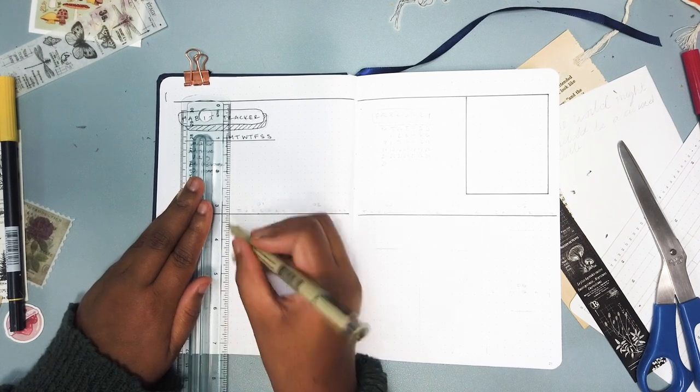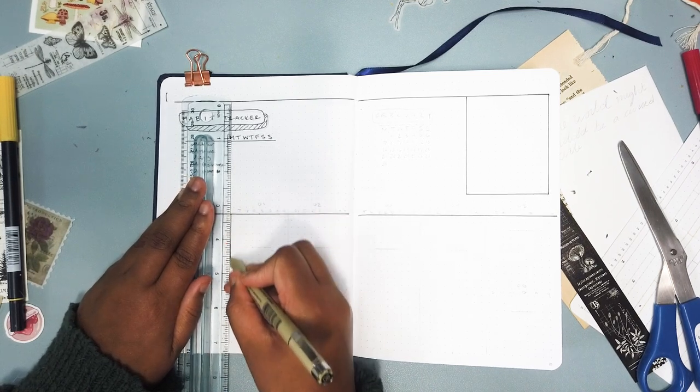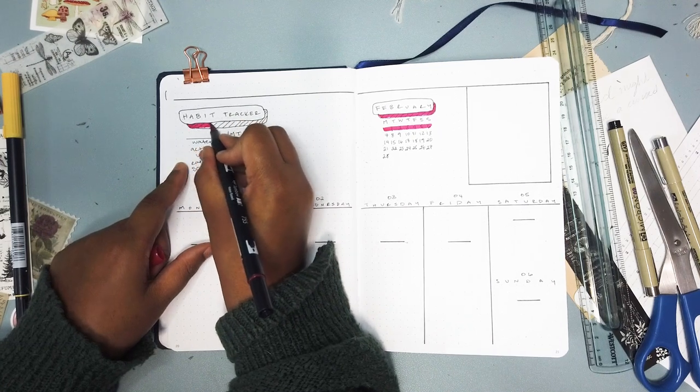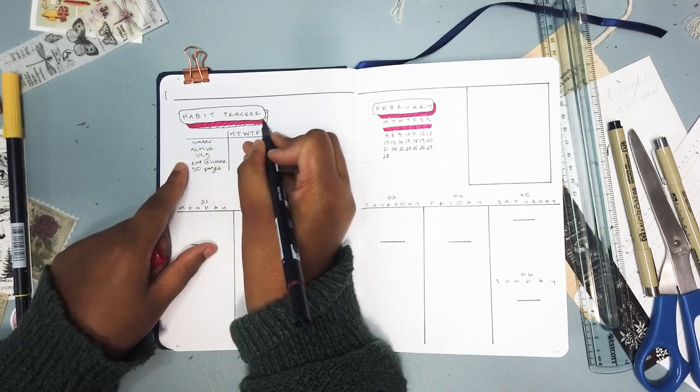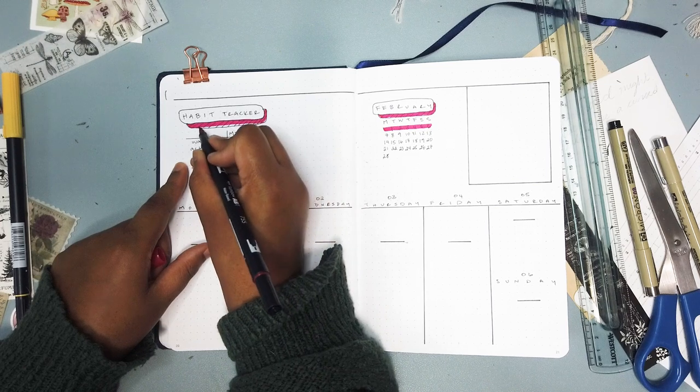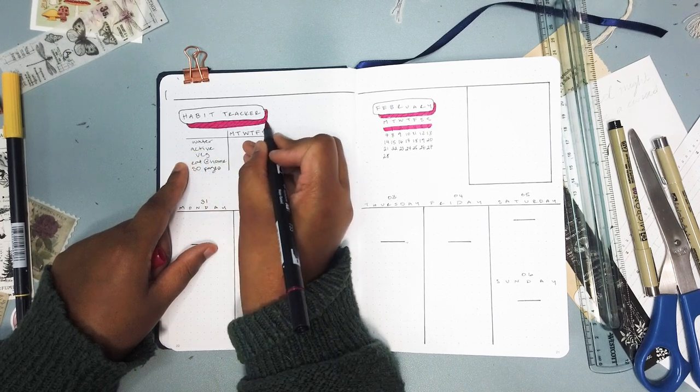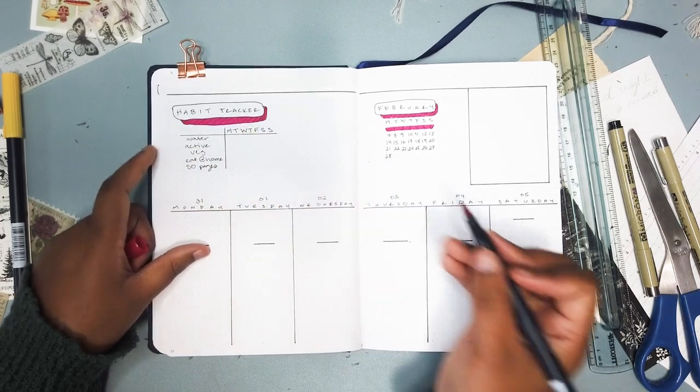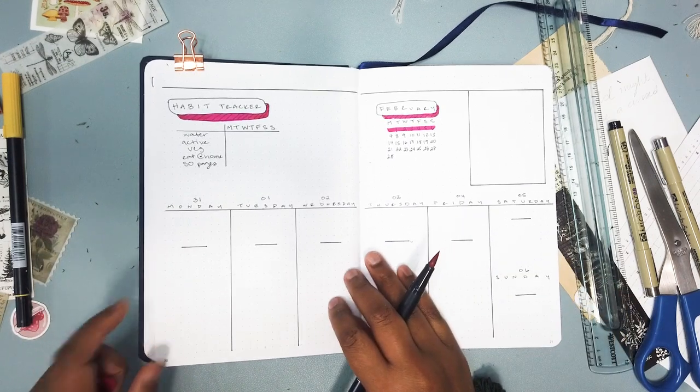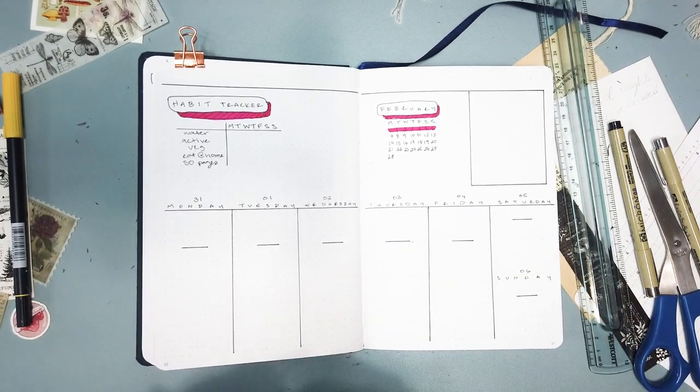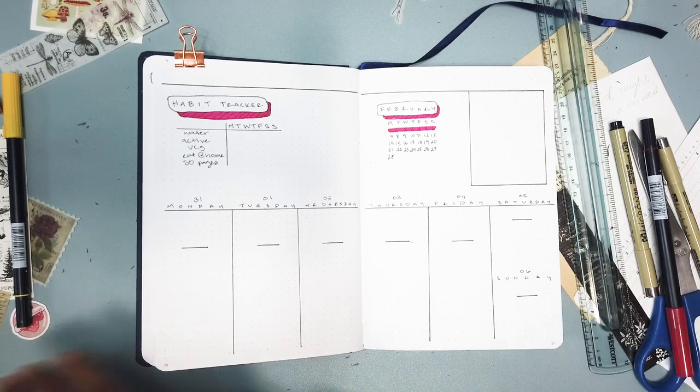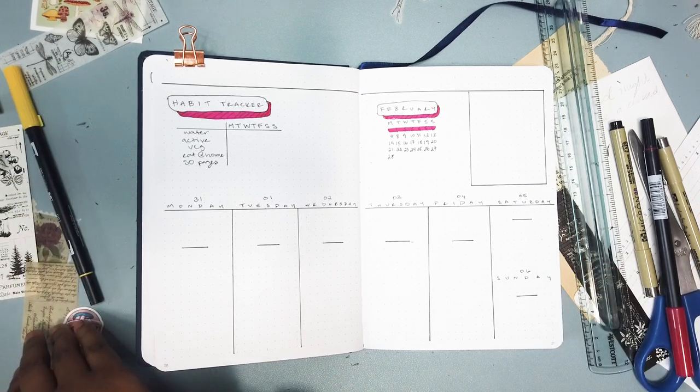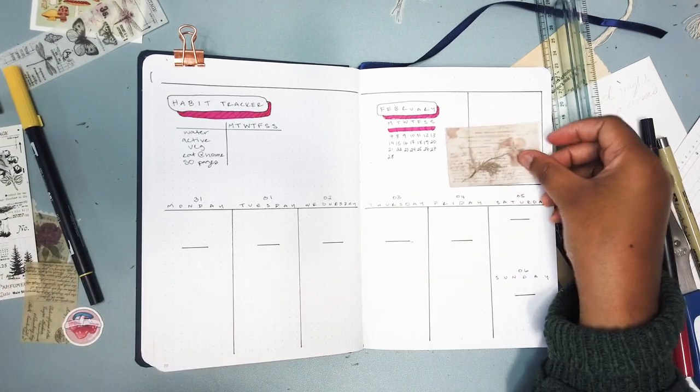So this is my first weekly spread here. I decided to kind of try out this style and see how I like it. So I put my little calendar and I highlighted what week it was. And then all across the bottom I have the days of the week there. And I have my habit tracker.